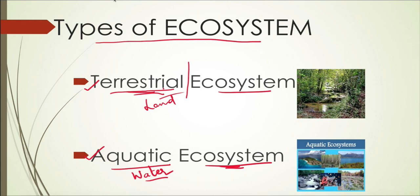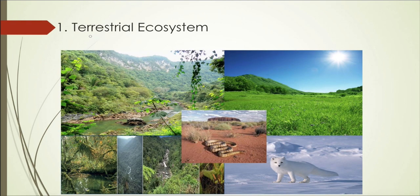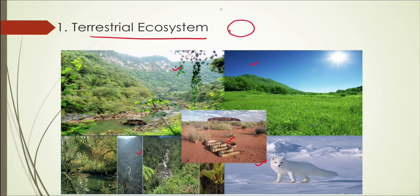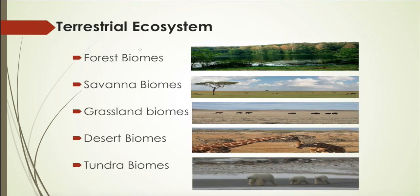Let's go one by one. First, we are going to discuss the terrestrial ecosystem. As you can see in the picture, we have different kinds of forests, some water, and some animals. The terrestrial ecosystem deals with all of these things combined — it can be a forest, land, or climate. Terrestrial ecosystem can be divided into five different types, and they are further subdivided.